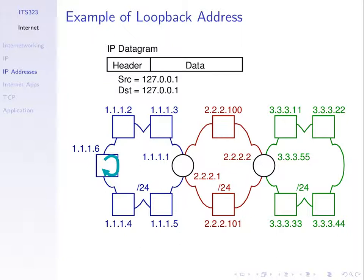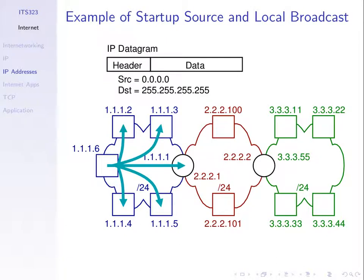The loopback address is sometimes called localhost — localhost means the local computer. It can be other addresses starting with 127, but 127.0.0.1 is the common one. In summary for this course: understand the network address and how it's created, and the directed broadcast address and how that's created. For the others — loopback 127.0.0.1, startup source (all zeros), and local broadcast (all ones) — remember them as you'll see them in some cases.